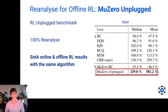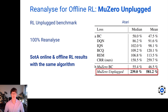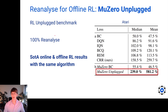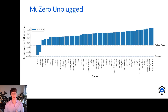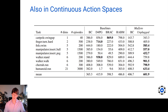We use the RL Unplugged benchmark to measure our performance. This benchmark includes Atari games — pixel-based with a discrete action space — as well as continuous control tasks from the MuJoCo control suite, which are state-based. Using 100% reanalyze, we obtain very good and robust performance across a variety of tasks, and similarly strong results on the control suite tasks compared to baselines.